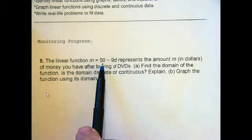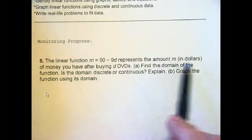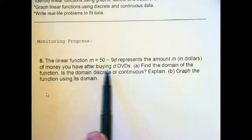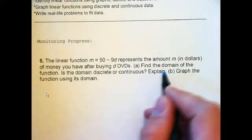But, the linear function M equals 50 minus 9D represents the amount M in dollars of money you have after buying D DVDs. Find the domain of the function. Is the domain discrete or continuous? And then, graph the function. Now, it's a little easier to go through this in maybe a different order. But, first thing I want you to do is to answer this question.